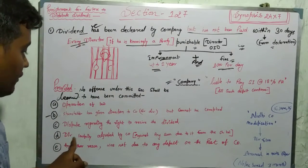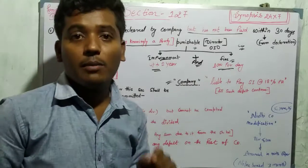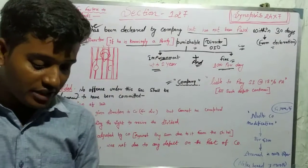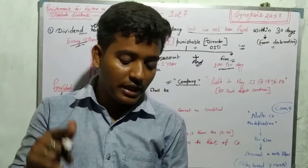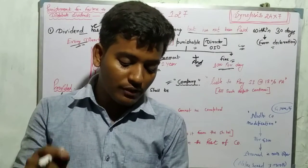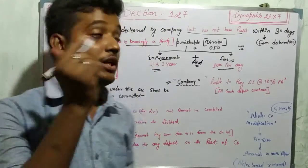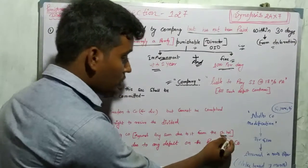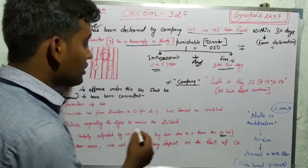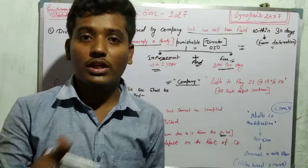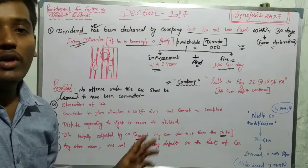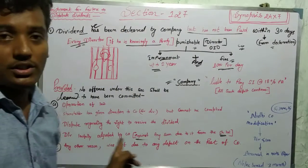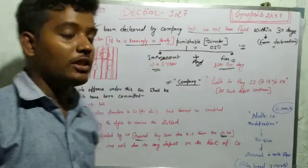Fourth, dividend lawfully adjusted by the company. Where the dividend has been lawfully adjusted by the company against any sum due to it from the shareholder. If the company lawfully adjusts against the dividend, it will not be a violation.